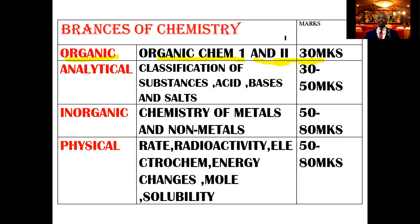From paper one and paper two, you are likely to get 20 marks from theory. Question three of paper three will be set from organic — the organic qualitative analysis — which attracts around 10 marks. Then we have analytical chemistry, which covers the classification of substances from Form 1: acids, bases, and salts. In a normal chemistry exam across paper one, paper two, and paper three, you are going to get between 30 to 50 marks from analytical chemistry. Question two of paper three — the test for cations and anions — is set from this particular area.